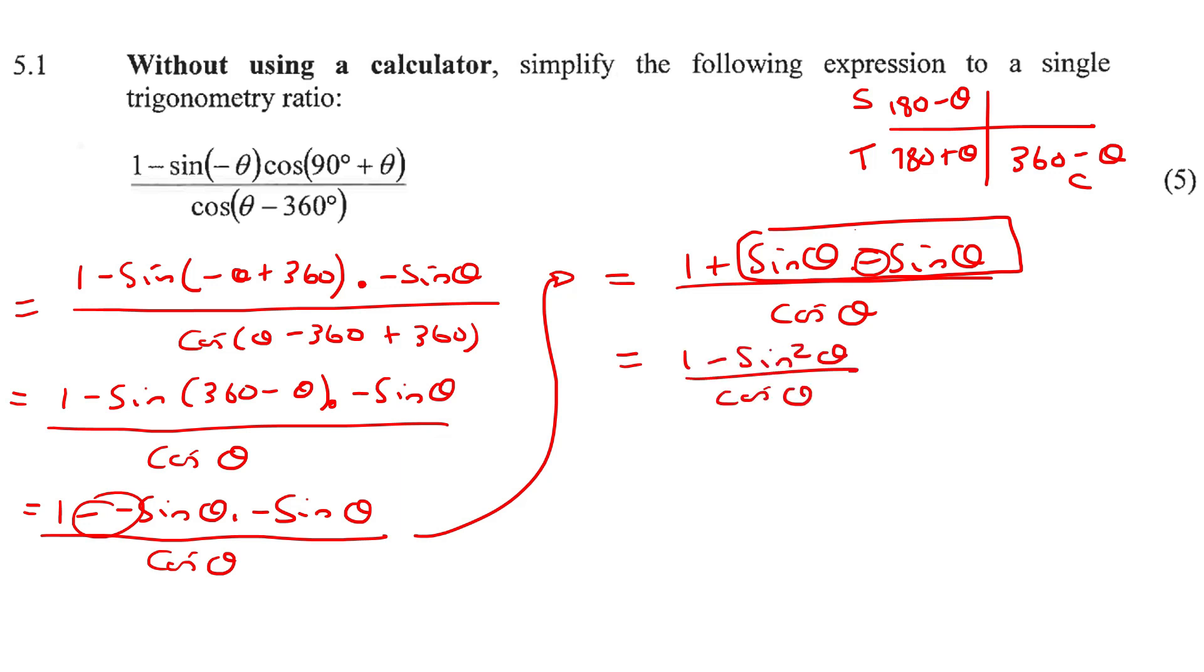Okay, now we know in grade 11 we learn about this formula sin squared theta plus cos squared theta equals one. But look at this. If you take this over to the other side, you're going to end up with cos squared theta equals to one minus sin squared theta. And so this is this part. And you see that it's the same as cos squared theta.